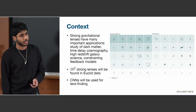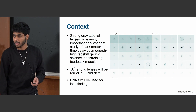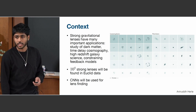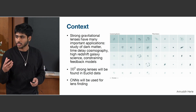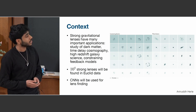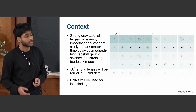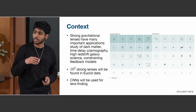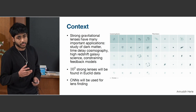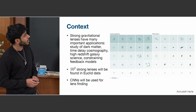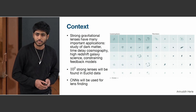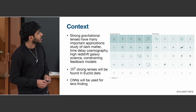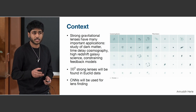We heard already from Connor a little bit about how lensing can be used for dark matter studies. But there are also many other applications for lensing, including measuring H0 when you have a time-varying source. And since you get a magnified view of a high-redshift galaxy, you can do a lot of interesting source science with lensing. Also, by measuring the slope of the density profile you can constrain feedback models. All of these fields are set to profit from future surveys like Euclid, which is expected to find 10^5 new strong lenses — roughly two orders of magnitude improvement over what we already have.